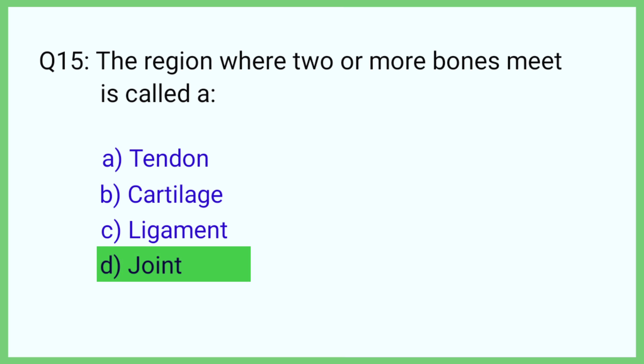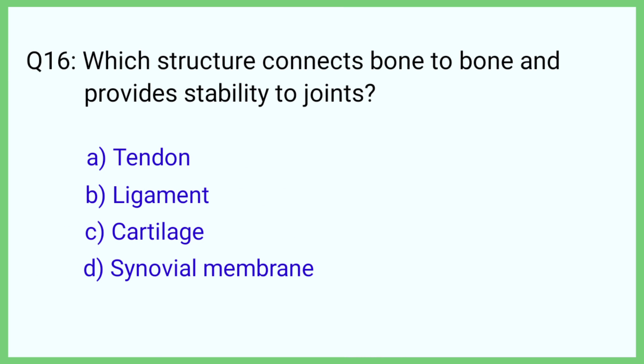Question number 16. Which structure connects bone to bone and provides stability to joints? The correct answer is option B: Ligament.